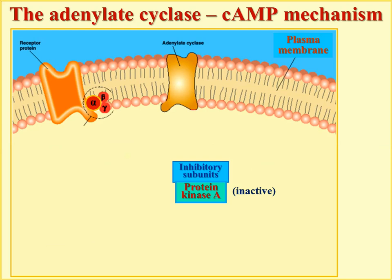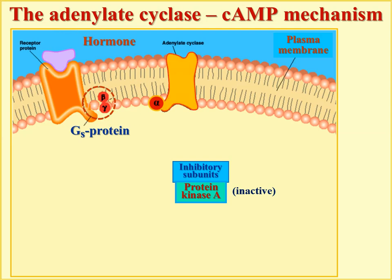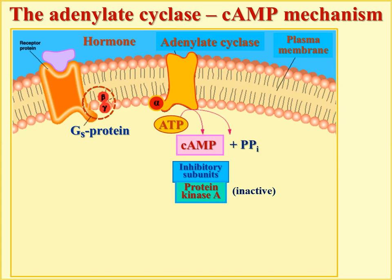The receptor is located in the plasma membrane of the cell and coupled with G protein inside. When a hormone molecule binds to the receptor from outside, the G protein becomes activated — for this pathway it's the Gs stimulating protein. Activated G protein means the alpha subunit separates from the others and moves to activate the nearby adenylate cyclase molecule. The cyclase enzyme then converts ATP molecules into cyclic AMP.